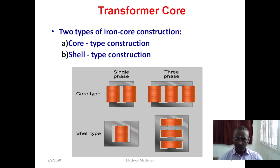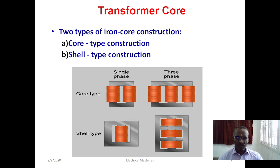First, we will move on to the core. The transformer core has two types: one is core type construction and another is shell type construction. In the core type construction, as you can see in this slide, for single-phase and three-phase transformers, laminated steel sheets are used for making the core. In the core type, the core is covered by the winding — visually we can verify this. The windings are placed on the core limb, and the winding covers the core. That is why it is called core type.